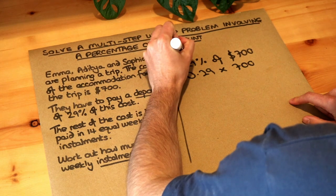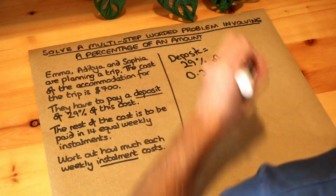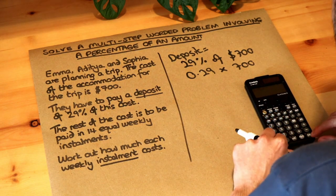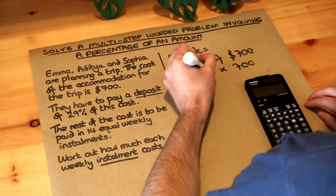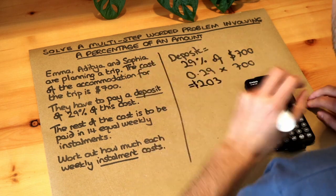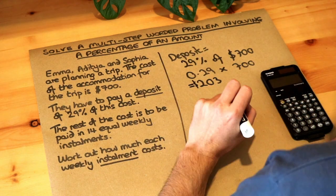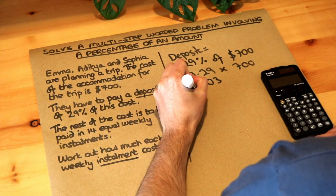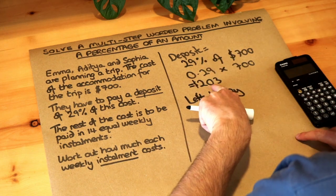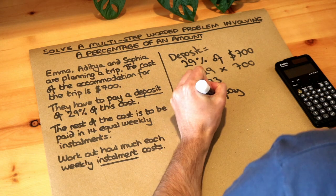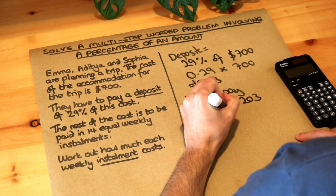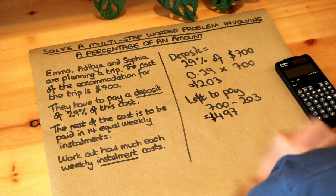So this is the deposit that we're paying. I'm going to do that on my calculator: 0.29 times 700 is 203 dollars — that's what we've paid immediately. Now, what's left to pay: we subtract that $203 from $700, so 700 minus 203, and that's $497. So that's what we've got left to pay.